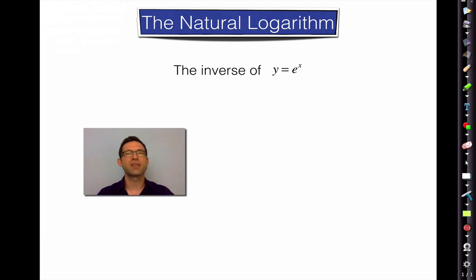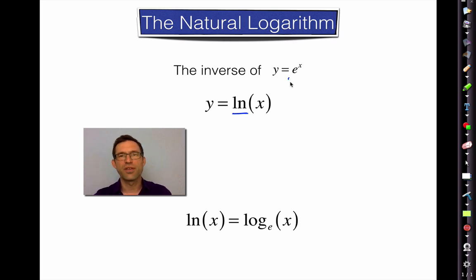So the inverse of y equals e to the x is the natural logarithm. Because it's so important, it actually gets a special symbol. Now, they don't use the word log. They use the word ln. And literally, this comes from the French word logarithme naturel. Now, it can be confusing to students because they just see an l and an n. So don't forget that the ln of x is also just the log base e of x. That's just what the inverse of an exponential is. Anytime we have y equals b to the x, its inverse is log base b of x. So if we have y equals e to the x and its inverse is ln of x, well, then that's got to be log base e of x.